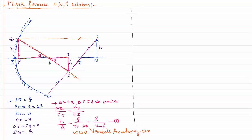You can see one more set of similar triangles here. There is triangle ICG and one more triangle COJ. They are also similar triangles because they are also sharing the same angle.